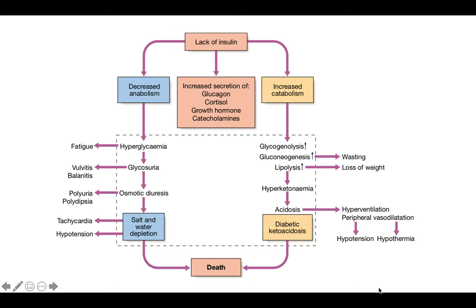The lack of insulin leads to increased secretion of glucagon, cortisol, growth hormones, and catecholamines, which leads to hyperglycemia. It also leads to decreased anabolism, which itself then leads to hyperglycemia, causing fatigue. There is an increased amount of glucose in the urine — glycosuria — which can cause issues like vulvitis and balanitis. The greater osmotic load in the urine can cause osmotic diuresis, presenting as polyuria and polydipsia.